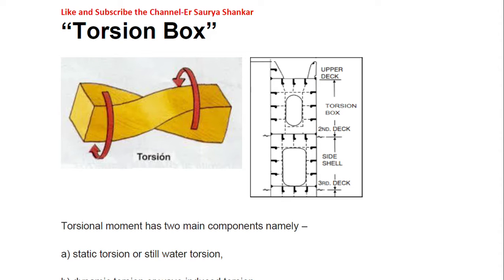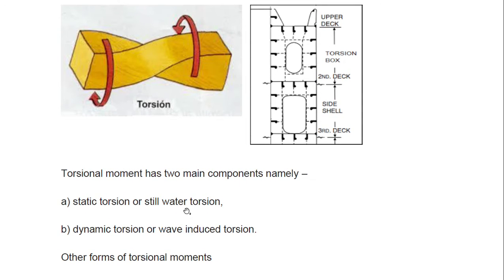Torsion is the twisting of an object. You can see here it is acting in this direction and this direction, trying to twist the vessel — similar to how you wring your clothes to squeeze the water out. That is torsion — the best example to understand it.